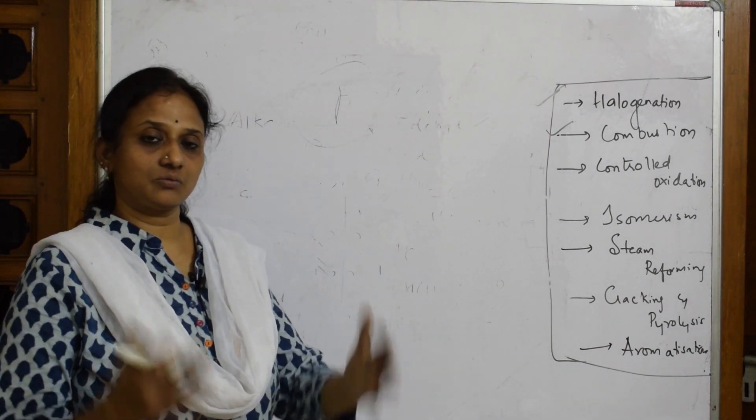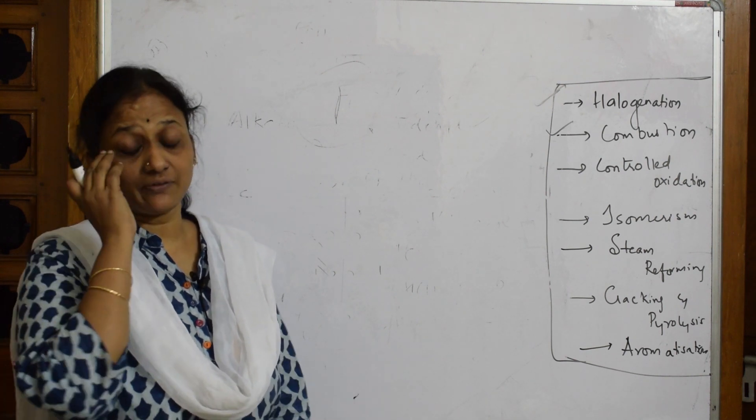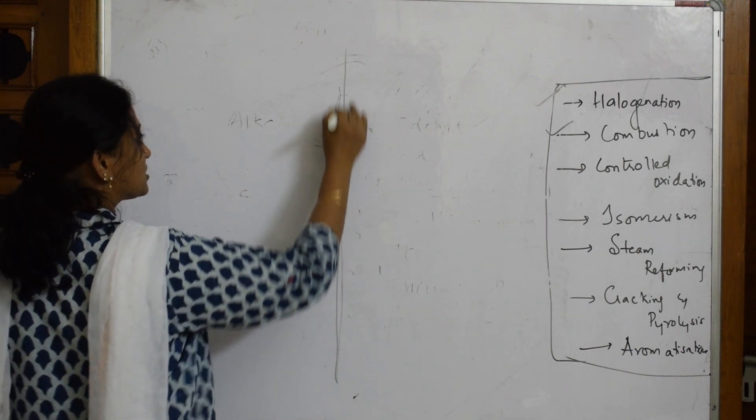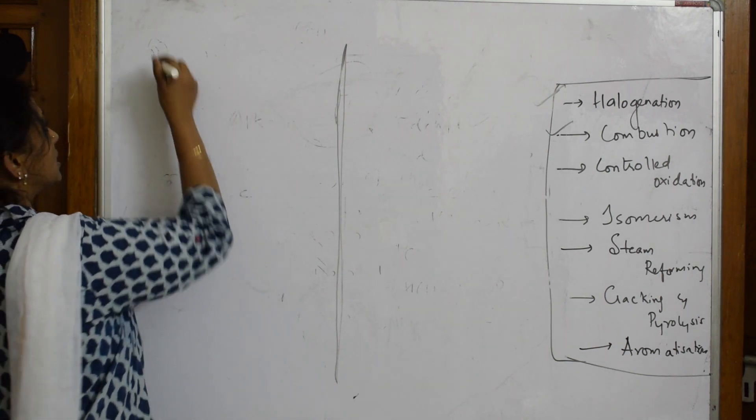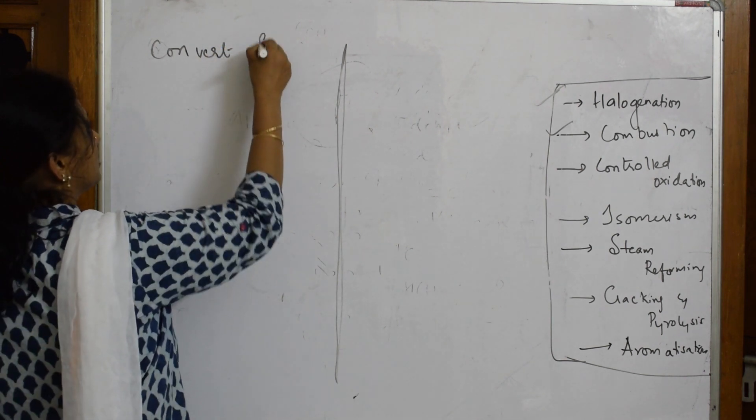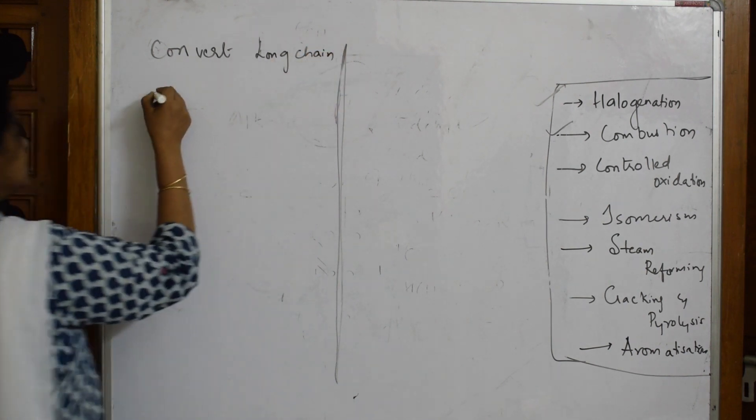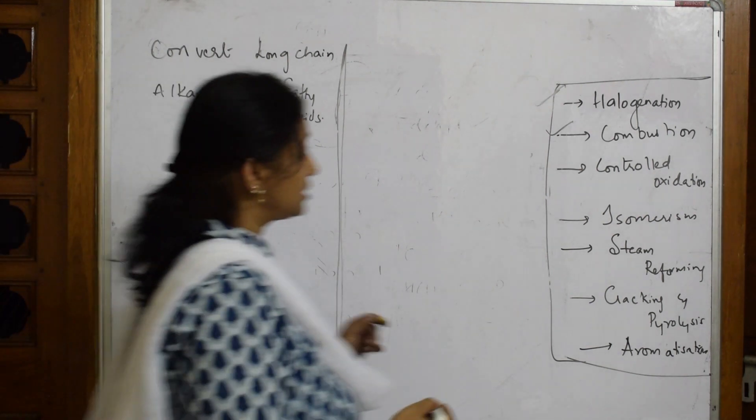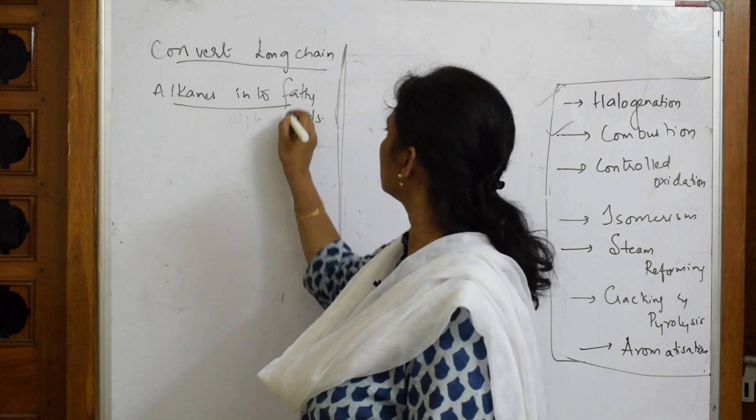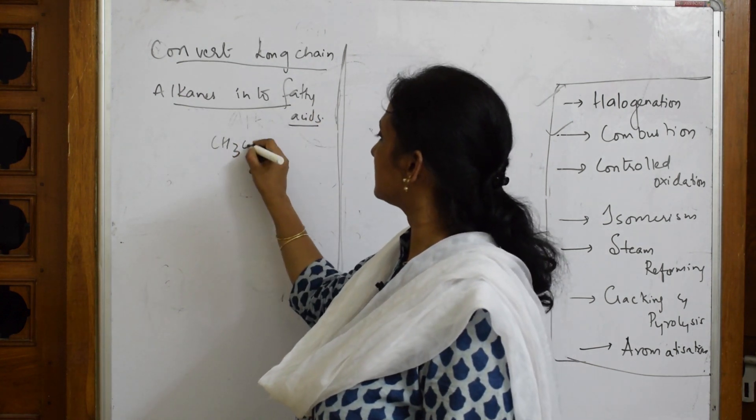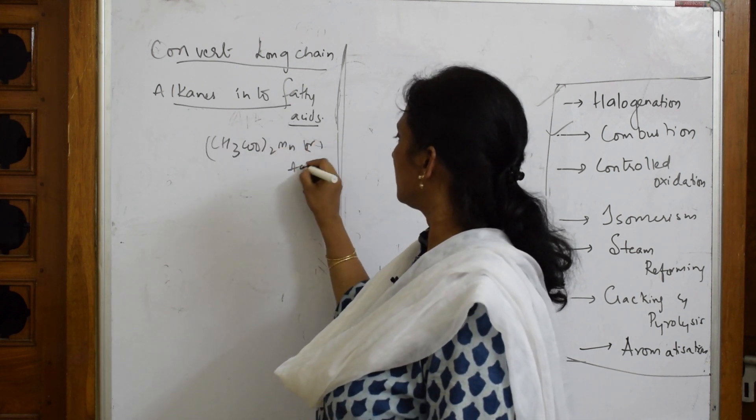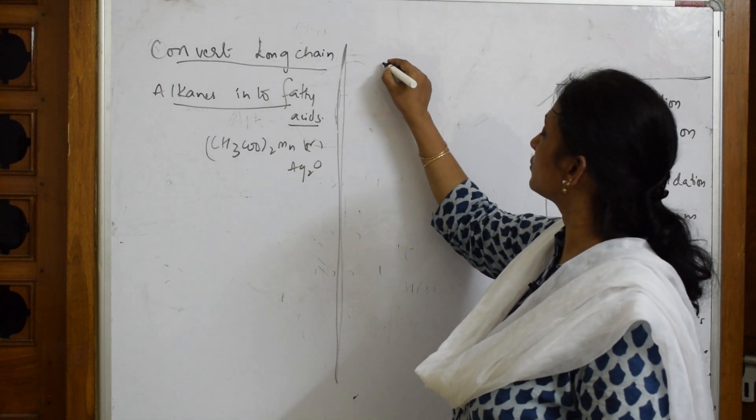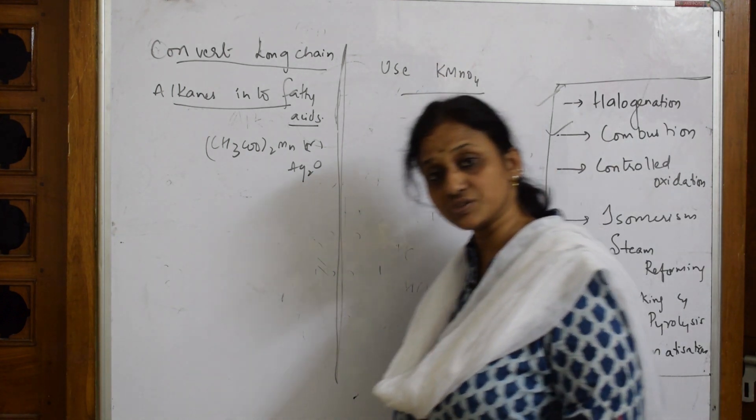We have seen controlled oxidation using which catalyst - molybdenum sesquioxide as well as copper. Now let us see two more. I am using different catalysts. Here, we are going to convert long chain alkanes into fatty acids. I am going to use a different reagent - manganese acetate or silver oxide. The last type of oxidizing agent which I am going to use is K-permanganate, which helps in oxidation.